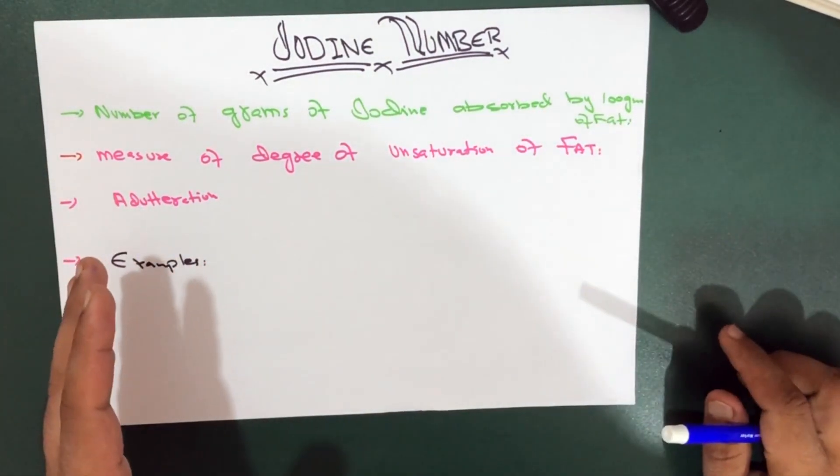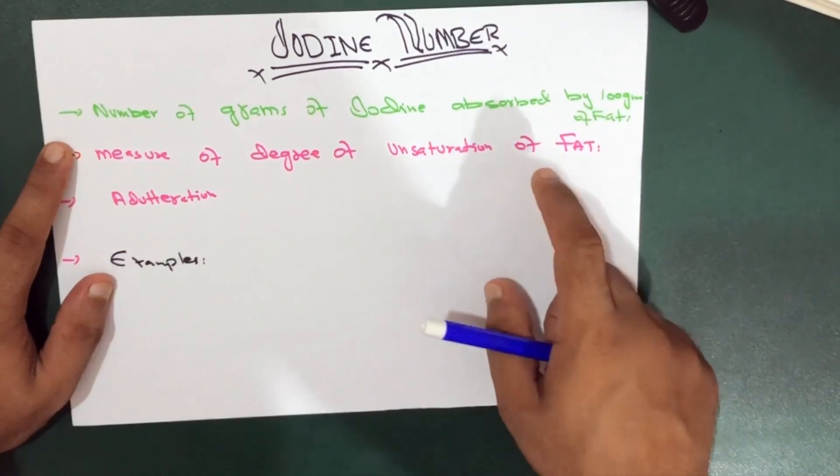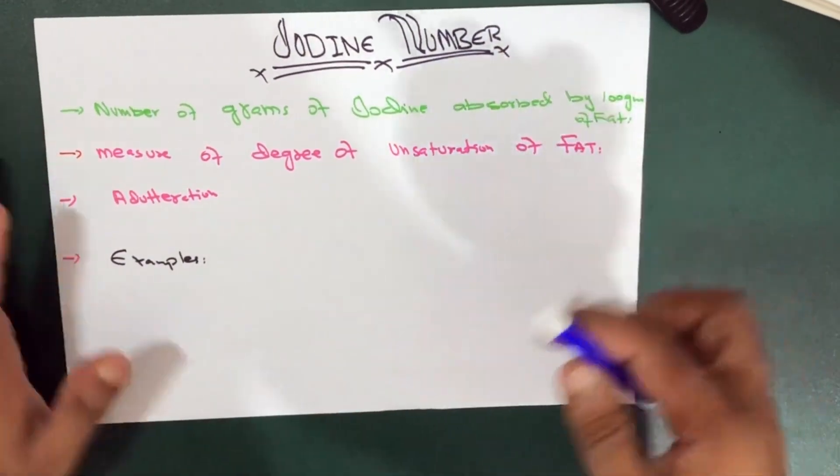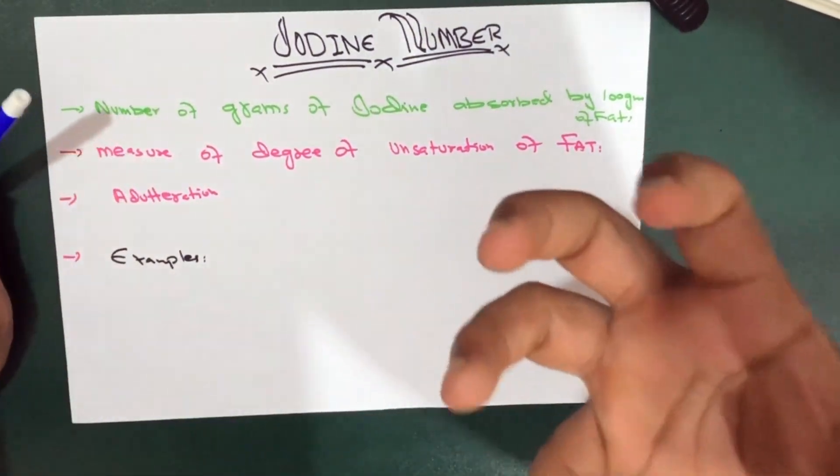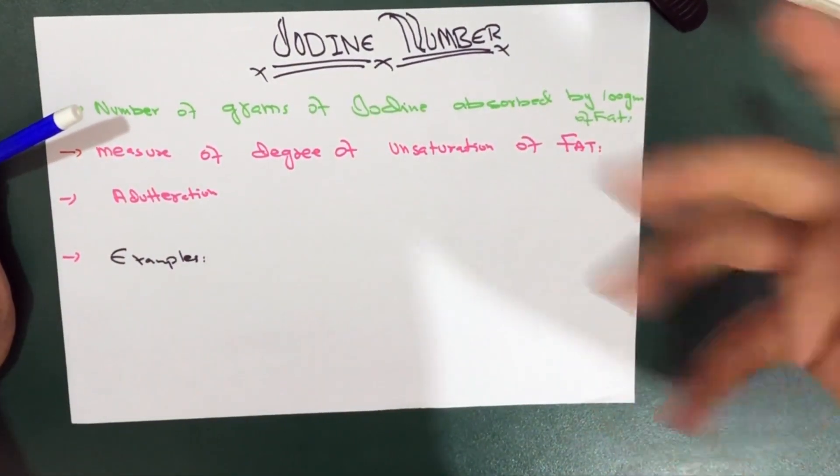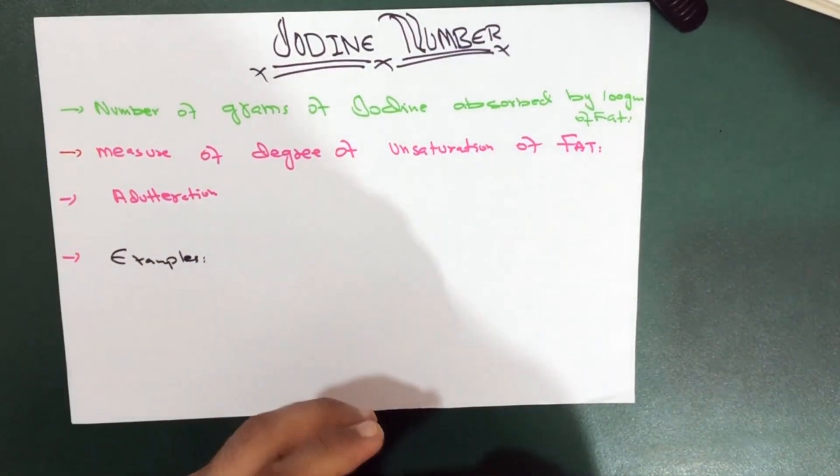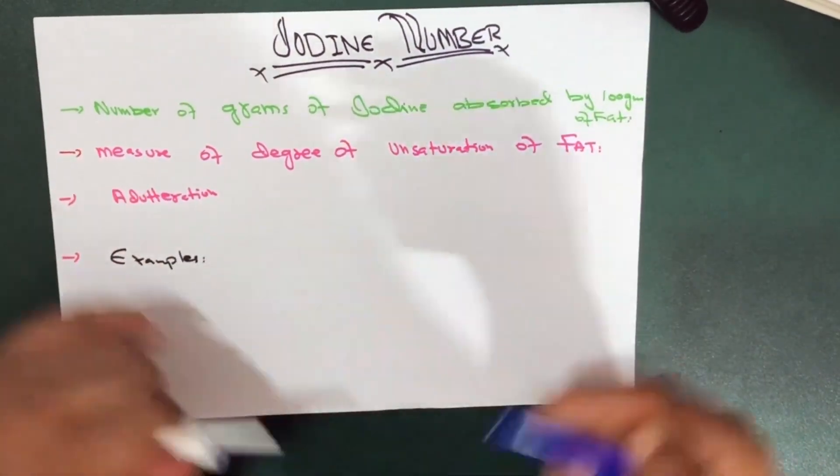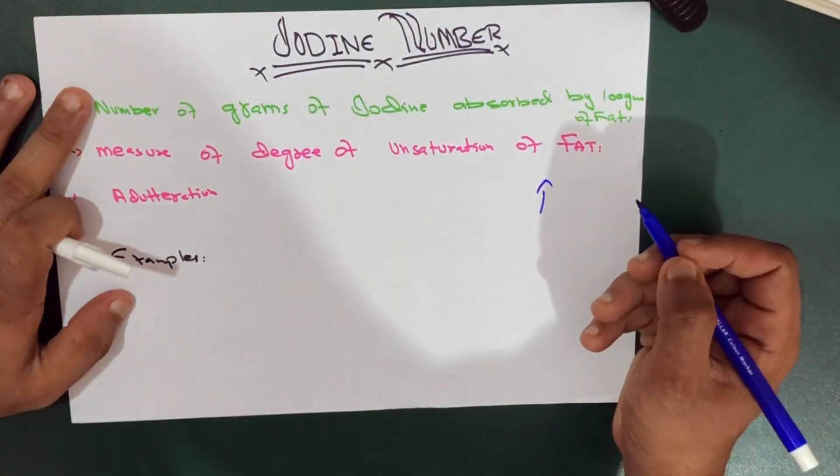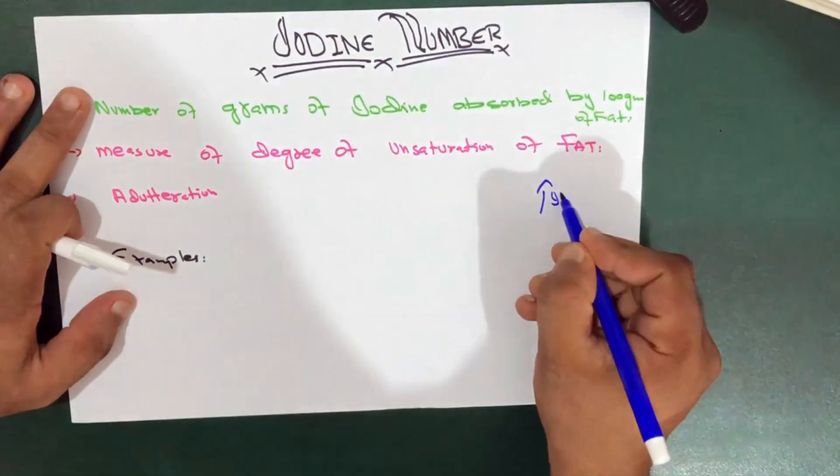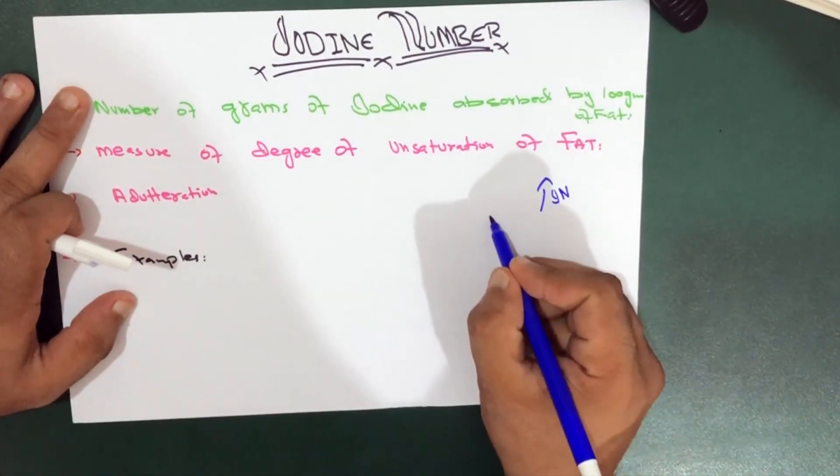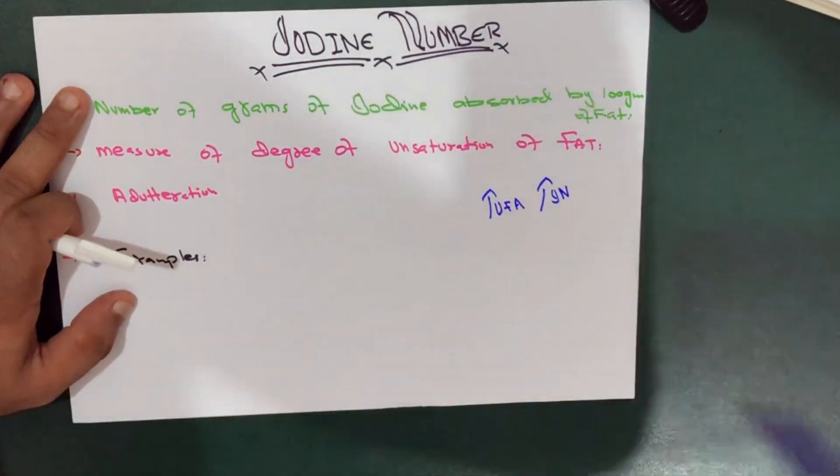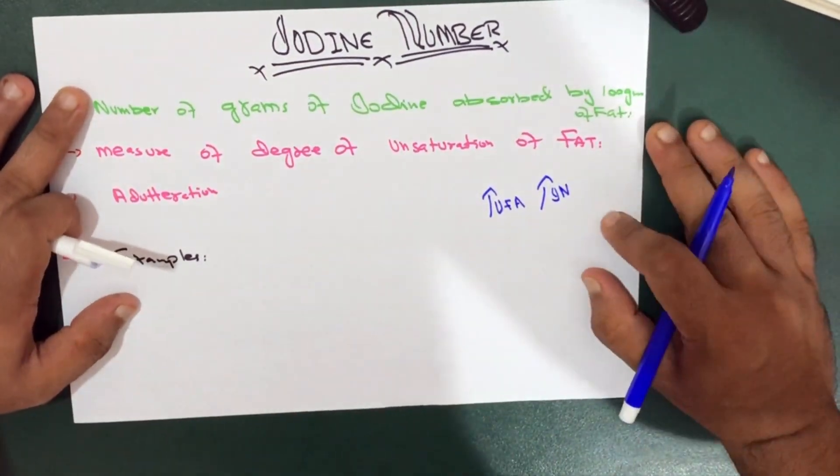We can say that the measure of degree of unsaturation of fat is due to the iodine number. For example, if a fat has more unsaturated fatty acids, it will absorb more iodine, so the iodine number increases. Increase in iodine number indicates more unsaturated fatty acids, which means more double bonds are present in the fatty acids.